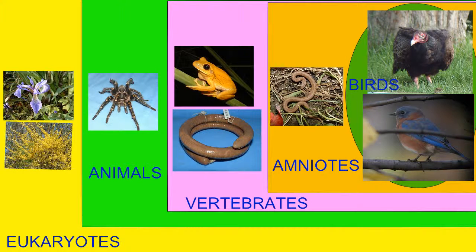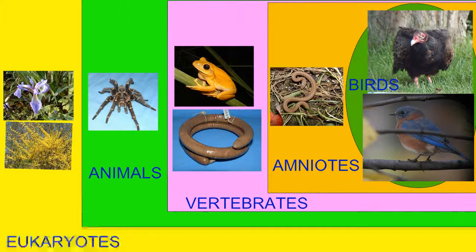Biologists would prefer to classify these organisms into groups such as these. The bluebird and the vulture would be classified together as birds. Both birds and the snake would be classified together as amniotes. The snake, the birds, and the two amphibians — the frog and the legless caecilian — would be classified together as vertebrates. The vertebrates plus the spider would be classified together as animals, and then all of the individuals here could be classified as eukaryotes.